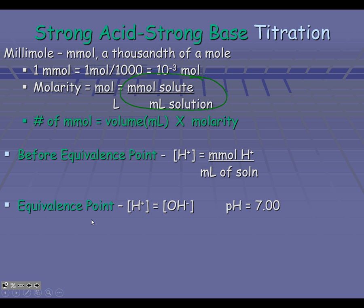In every titration, we are also curious about what is the pH at the equivalence point. For the strong-strong situation, whenever we are taking a strong acid and reacting it with a strong base, the pH is 7. That is not true for the other titrations. But what is always true at the equivalence point, no matter what kind of titration: our hydrogen ions will always equal our hydroxide ions. On the strong-strong, we end up at 7, we end up at neutral.